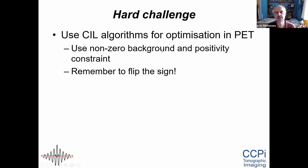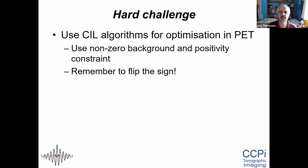If you have a non-zero background and you impose a positivity constraint — which some algorithms in CIL can do — then you can attempt this. There is no existing code for that whatsoever; it's much harder than the conjugate gradient challenge Christoph set. Let's see how far you can get. Remember: if you use the existing objective function from PET you want to flip the sign, but if you use the KL distance in CIL, you don't have to.